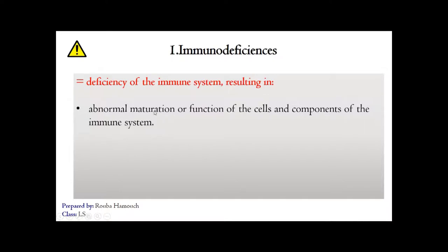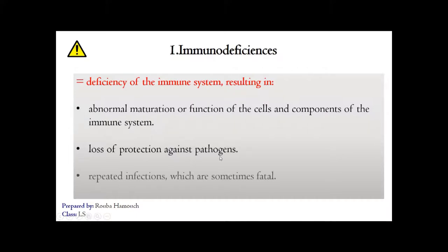We may have an abnormality in the maturation of B-lymphocytes or T-lymphocytes, or an abnormality in the function of phagocytes, or abnormalities in the complement. This results in a loss of protection against pathogens and repeated infections, which are sometimes fatal.